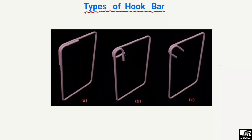Welcome back to E7 Engineering YouTube channel. In today's lecture we are going to discuss the different types of hook bars. There are mainly three types: 90 degree, 180 degree, and 135 degree. These are represented here by A, B, and C.